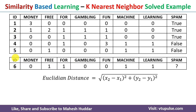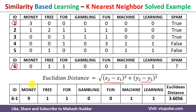To calculate the Euclidean distance from the new example (example 6) to the first example, we compute the squared differences for each feature, sum them, and take the square root. For instance: (0−3)²=9, (1−0)²=1, and so on. The sum is 9+1+1+1+1=13, and the square root of 13 is approximately 3.6056. This is the Euclidean distance from example 6 to example 1.